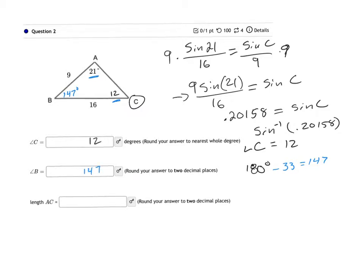Now, to find the length of AC, that's the same thing as saying side B. So I'm going to set up another equation. I'm going to start with my given information again. So I'm going to do the sine of 21 over 16 is equal to the sine of 147 over B.